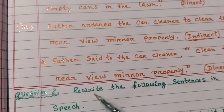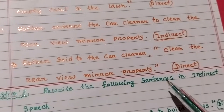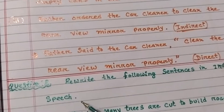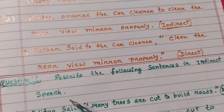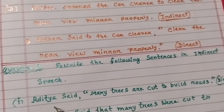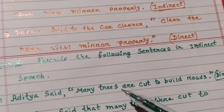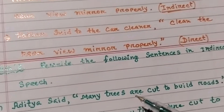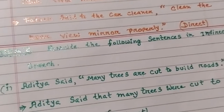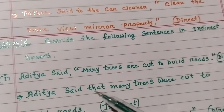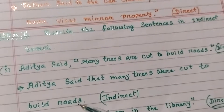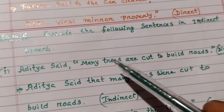Question number 2: rewrite the following sentences in indirect speech. Number 1: Direct speech — 'Aditya said, many trees are cut to build roads.' In indirect speech: 'Aditya said that many trees were cut to build roads.' Since the reporting verb is in past tense, the present tense verb 'are' changes to past tense 'were'.